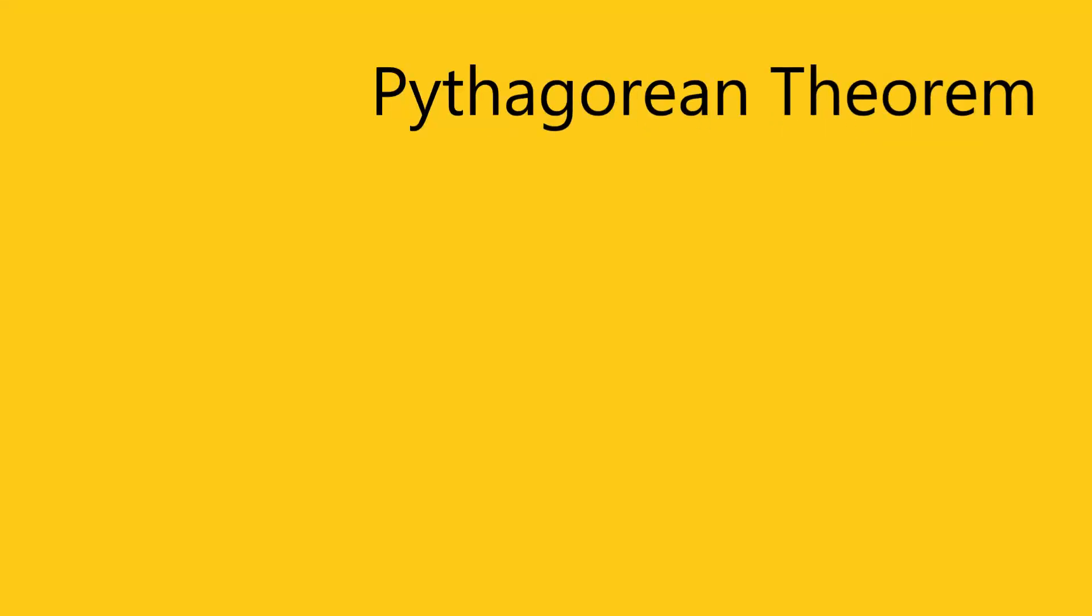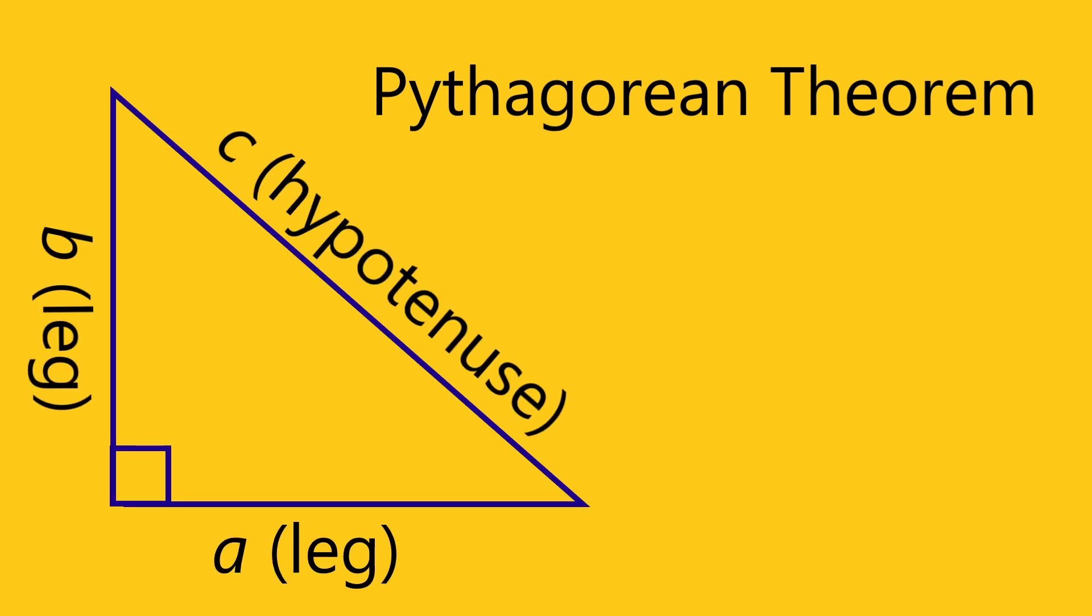The Pythagorean Theorem states that the sum of the squares of the lengths a and b of the two legs of a right triangle is equal to the square of the length c of its hypotenuse. Algebraically, this becomes the well-known equation a squared plus b squared equals c squared.